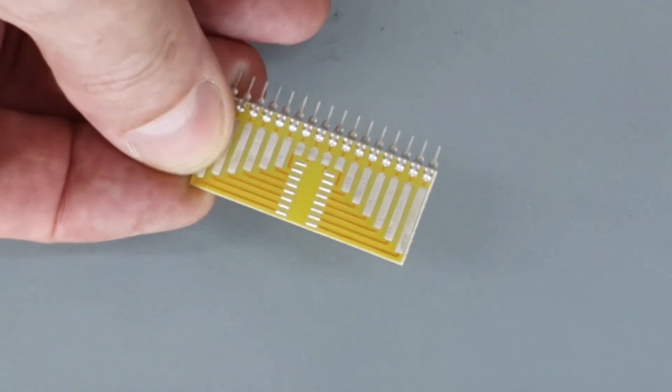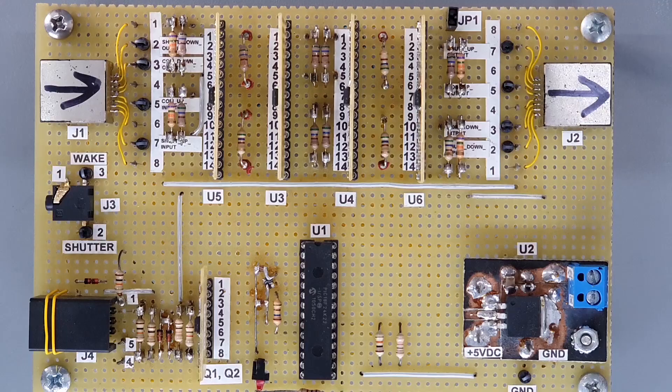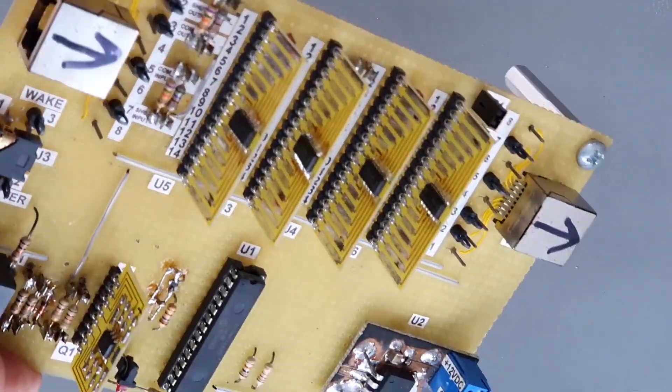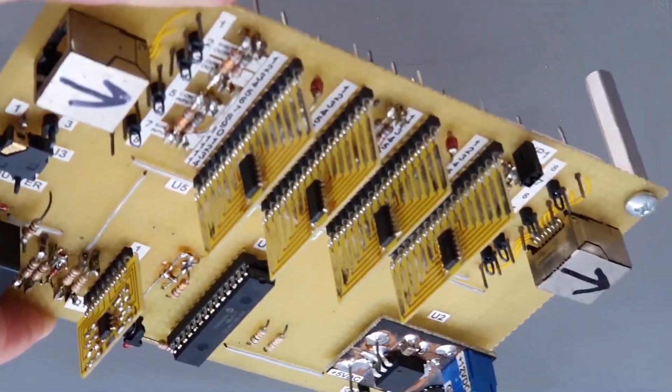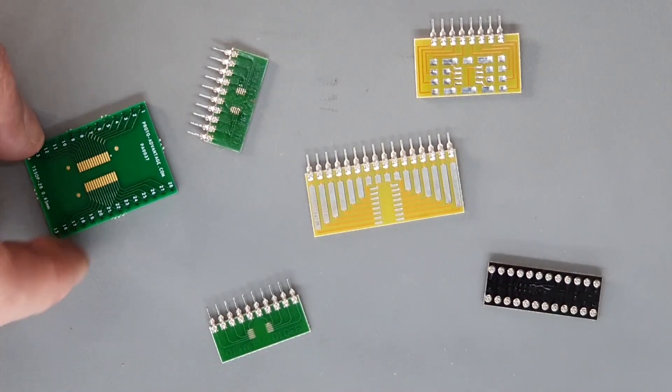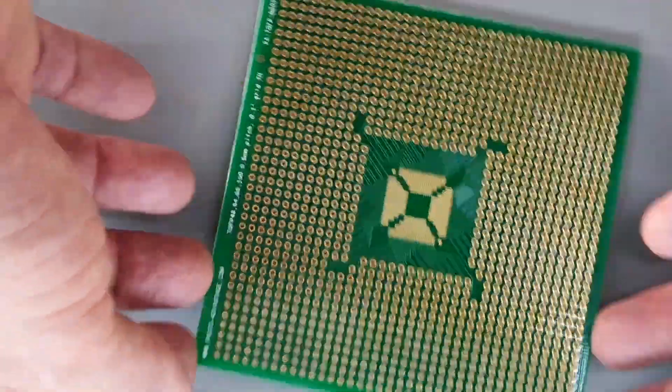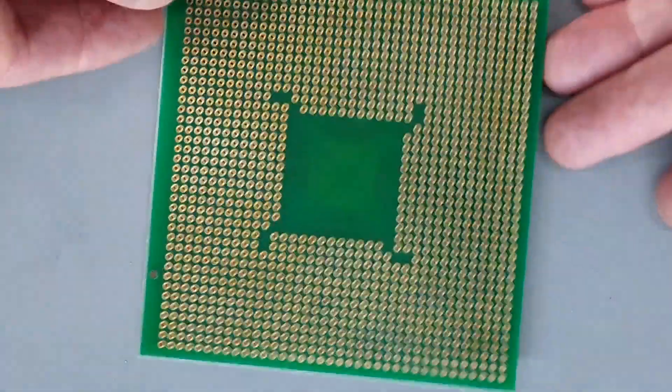Surfboards allow you to mount fine pitch surface mount parts and wire to them at a much larger physical pitch in the zone where our fat sausage fingers are workable. These surfboards come in all sizes and shapes. Stock up on these so you have them at the ready.